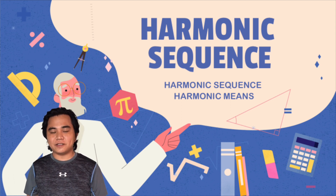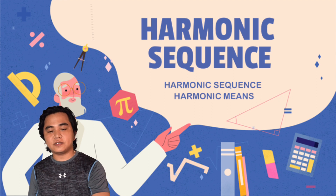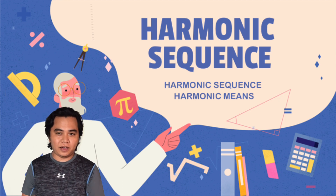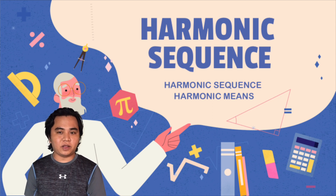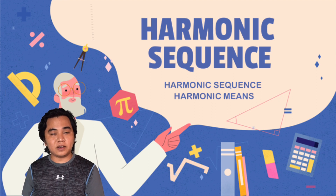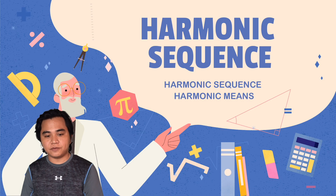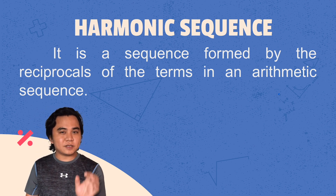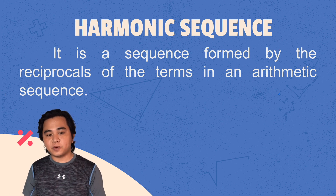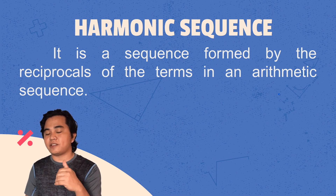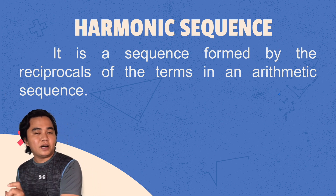Welcome, Grade 10 students, for another discussion of sequence and series. For today, we're going to have a discussion on harmonic sequence. At the end of the video, you're going to identify the nth term of harmonic sequence and also how to identify harmonic means. In harmonic sequence, there is no such thing as a harmonic series formula — you can identify the sum, however there is no formula. Harmonic sequence is a special type of sequence formed by getting the reciprocal of the terms of an arithmetic sequence.